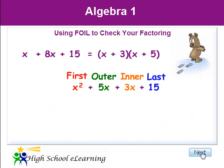When we combine all the terms, we get x squared plus 8x plus 15. If you get your original quadratic trinomial, you have verified that you factored it correctly.